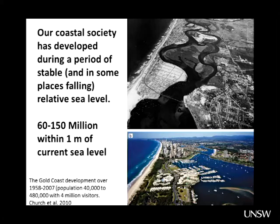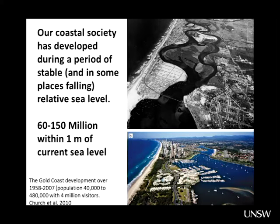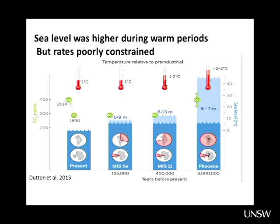Moving to sea level: today we largely live in a coastal society. About 60 to 150 million people live within one metre of the current high water mark, and we're moving ever closer to the coast in both developed and developing nations. One example — the Gold Coast — went from roughly 40,000 people in 1958 to half a million by 2007, with about 4 million visitors a year.